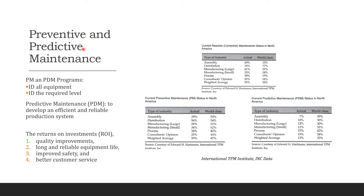Preventive and predictive maintenance are under total productive maintenance. You also have reactive and proactive maintenance — proactive is the opposite of reactive or corrective maintenance.